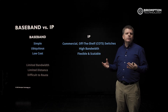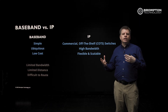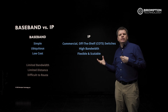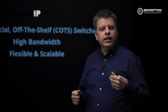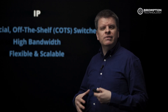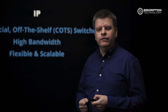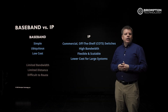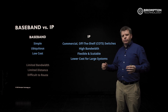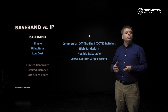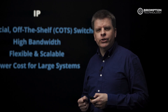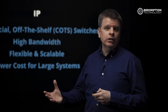IP is very flexible and very scalable. It gives us a huge number of choices in terms of how we want to construct our network, how we want to send data from our sources to our receivers, and if we have a very large network we can accommodate a huge number of devices in a way that typically doesn't really scale up with baseband video. If we're working with a large system, baseband can get quite expensive — huge matrix switches get disproportionately expensive. But with IP, partly because of all the different devices available off the shelf, the cost can actually be lower for a large system.